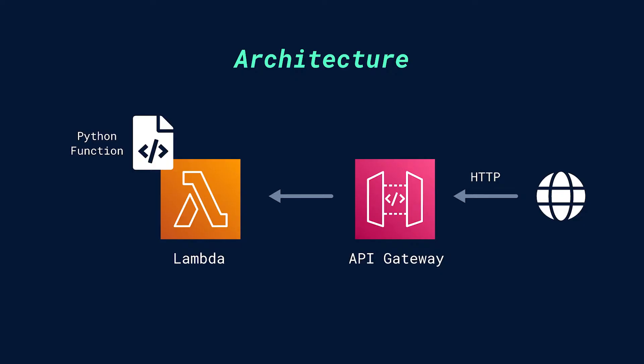Everything we do here today will fall under free tier usage, so it's not going to cost you anything. The architecture in this project is quite simple. First, we're going to have a Python function written locally into a file. Then we're going to create an AWS Lambda resource where we'll put this code — this is the cloud function we'll execute. Finally, to trigger this cloud function, we'll integrate it with API Gateway so that we end up with an HTTP endpoint we can use in the terminal or browser to invoke this function.